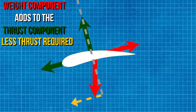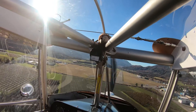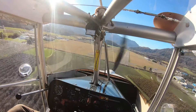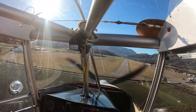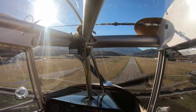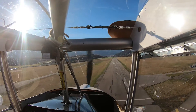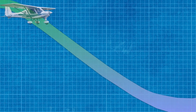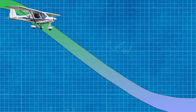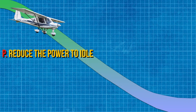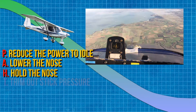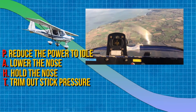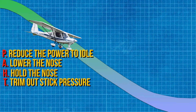Let's look into putting the aircraft into a stable descent. First things first, look at the temperatures and pressures — as we descend, our engine will cool down very rapidly. Look outside the cockpit for traffic, making sure to look all around as well as below the aircraft. Now it's time to use the acronym PAT: reduce the power to idle, lower the nose to maintain your airspeed, hold the nose in the lower nose attitude, and then trim out all the pressure in the stick.